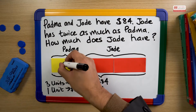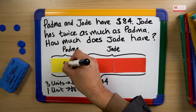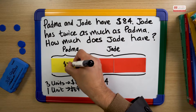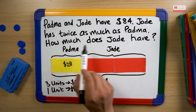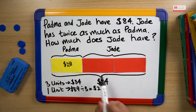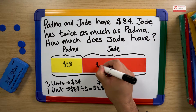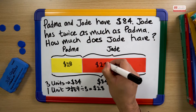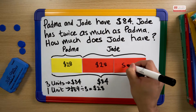I'm going to write $28 here because we know that each unit is $28. But the question is how much does Jade have? We can see Jade has two parts, both of which are $28.